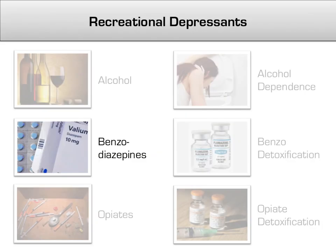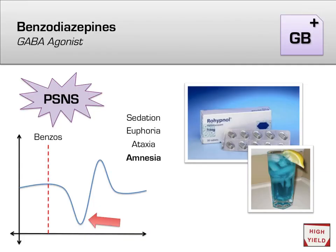We already covered benzodiazepines under the anxiolytic section, but it's worth noting that benzos, and barbiturates as well, have no less of an abuse potential just because you can prescribe them. Indeed, benzodiazepines are among the most frequently abused drugs of any kind, prescription or not. Mechanistically, when you prescribe someone benzos, you're basically prescribing them alcohol with a somewhat cleaner pharmacologic profile, so please weigh the risks and benefits before starting a patient on them. The effects of benzodiazepine intoxication are all about relaxing: the central nervous system shuts down, muscles unclench, and like alcohol, marked ataxia can occur.